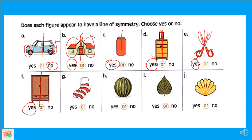نروح للسوكس الجميلة دي. يا ترى السوكس دي لها line of symmetry ولا لا؟ مستحيل. ارسم لها line of symmetry فين؟ لأنا لو رسمنا هنا هتلاقي الحاجة اللي فوق دي مش زي اللي تحت، مختلفين عن بعض. يبه دي has no line of symmetry.